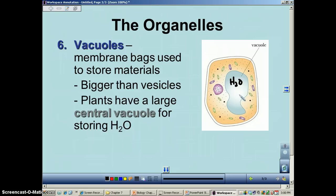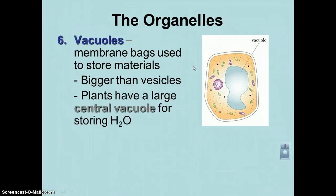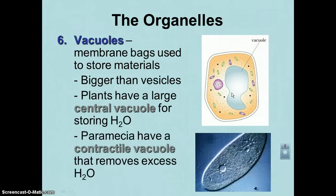When a plant wilts, their central vacuoles are empty. Other creatures that live in a freshwater environment have the problem of water always moving in, and they need to pump it out. Things like a paramecia — which you would have seen floating around when you looked at pond water last week — as the water comes in, they pump it out using what's called a contractile vacuole.